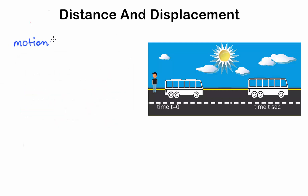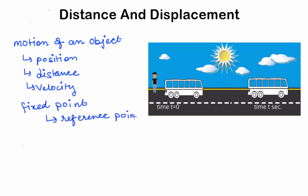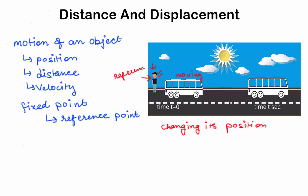If we want to describe the motion of an object, we measure the position, distance, velocity, and other such parameters of the object. Position of an object is measured from some fixed point known as a reference point. For example, if a person says the bus is moving, it means that the bus is changing its position with respect to this person in a given time interval. In this case, this person is the reference point.